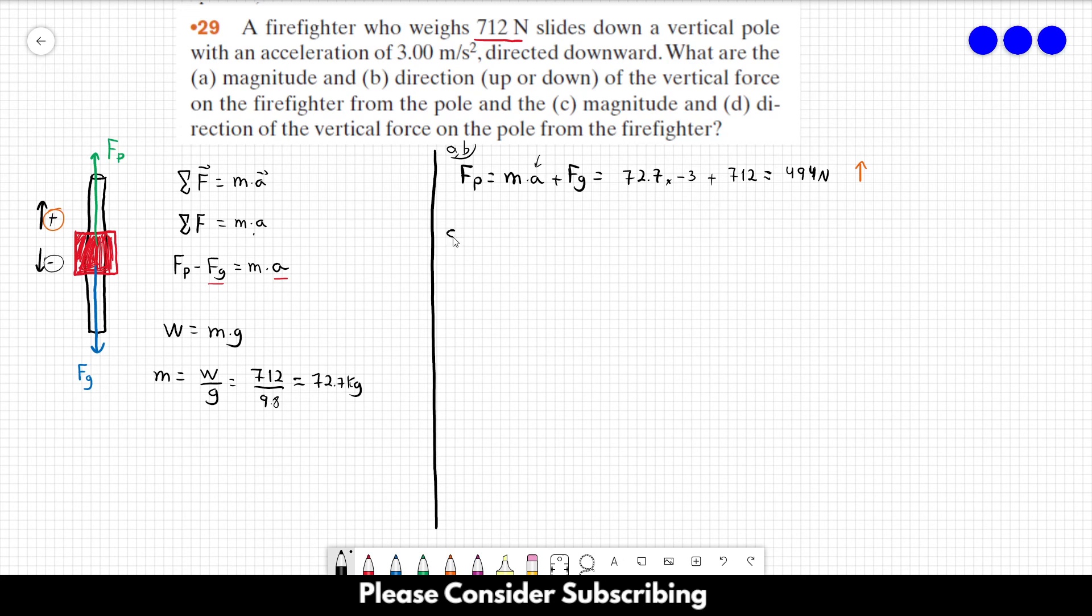As for letters C and D, we can use Newton's third law. So since the pole makes a force on the firefighter, the firefighter makes a force on the pole, which has the same magnitude. However, it points to the opposite direction. So the force from the firefighter is equal to minus 494 newtons. And of course, this points downwards. So that's it. That's exercise 29.